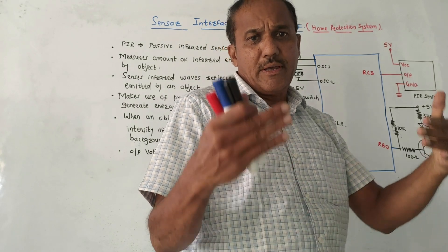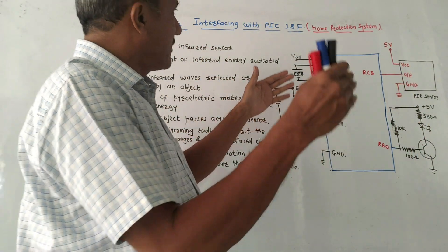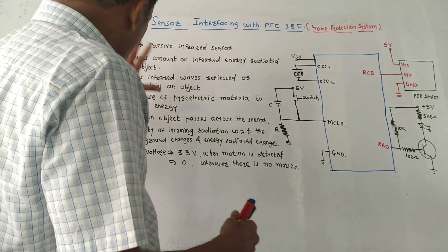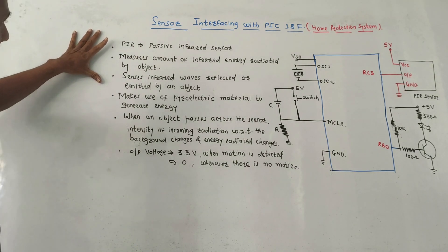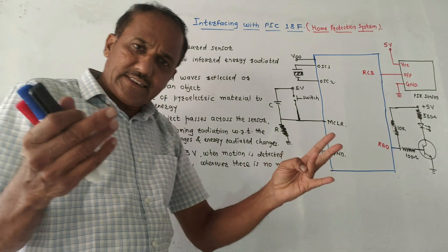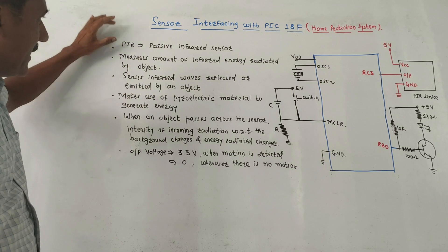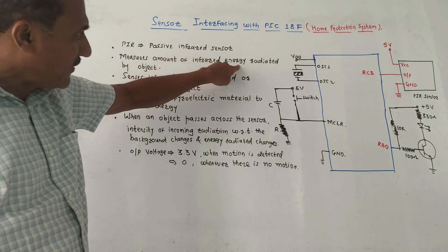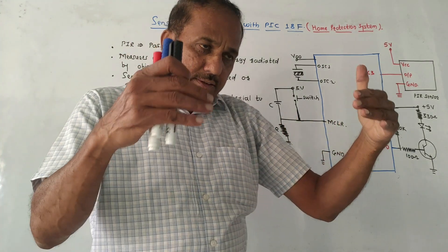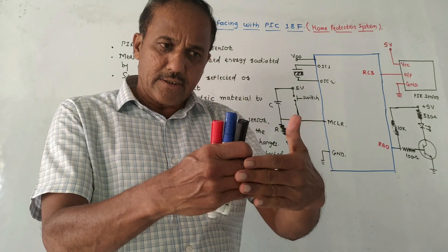The question is: draw the interfacing diagram of PIR sensor with the PIC 18F microcontroller and write the corresponding program. First we will discuss the basics related to this passive infrared sensor. There are two types of sensors — one is active and another is passive. Presently we are talking about passive infrared sensor, which measures the amount of infrared radiation energy radiated by an object.